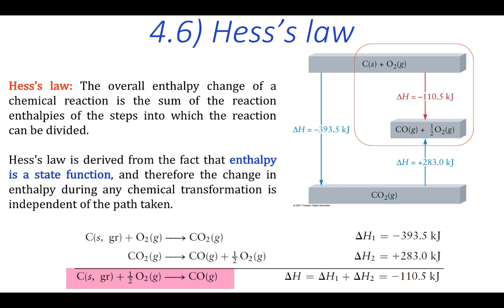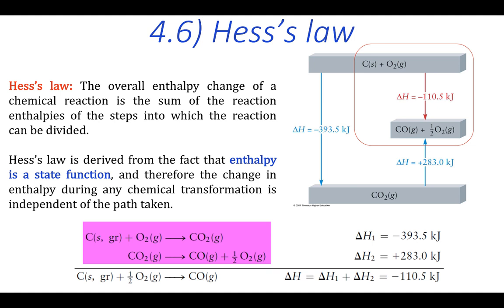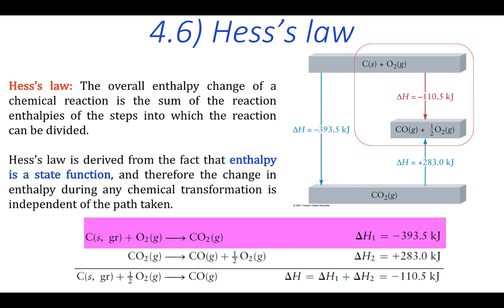So instead, we can consider this reaction to be the sum of these two reactions. In the first of these two reactions, combustion of graphite in the presence of plenty of oxygen converts all the graphite into carbon dioxide, and we can use calorimetry to determine the enthalpy change of this reaction, which turns out to be minus 393.5 kilojoules.